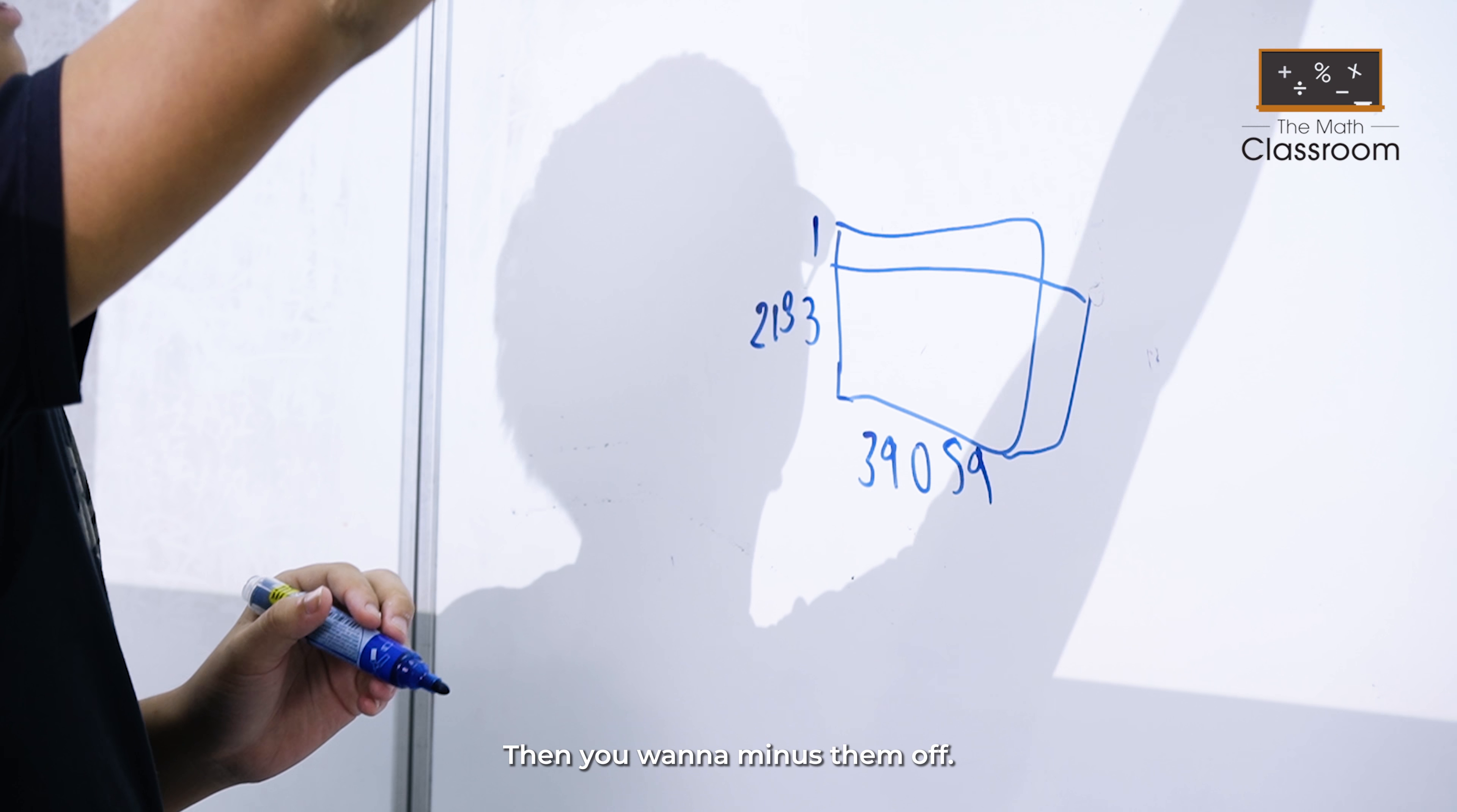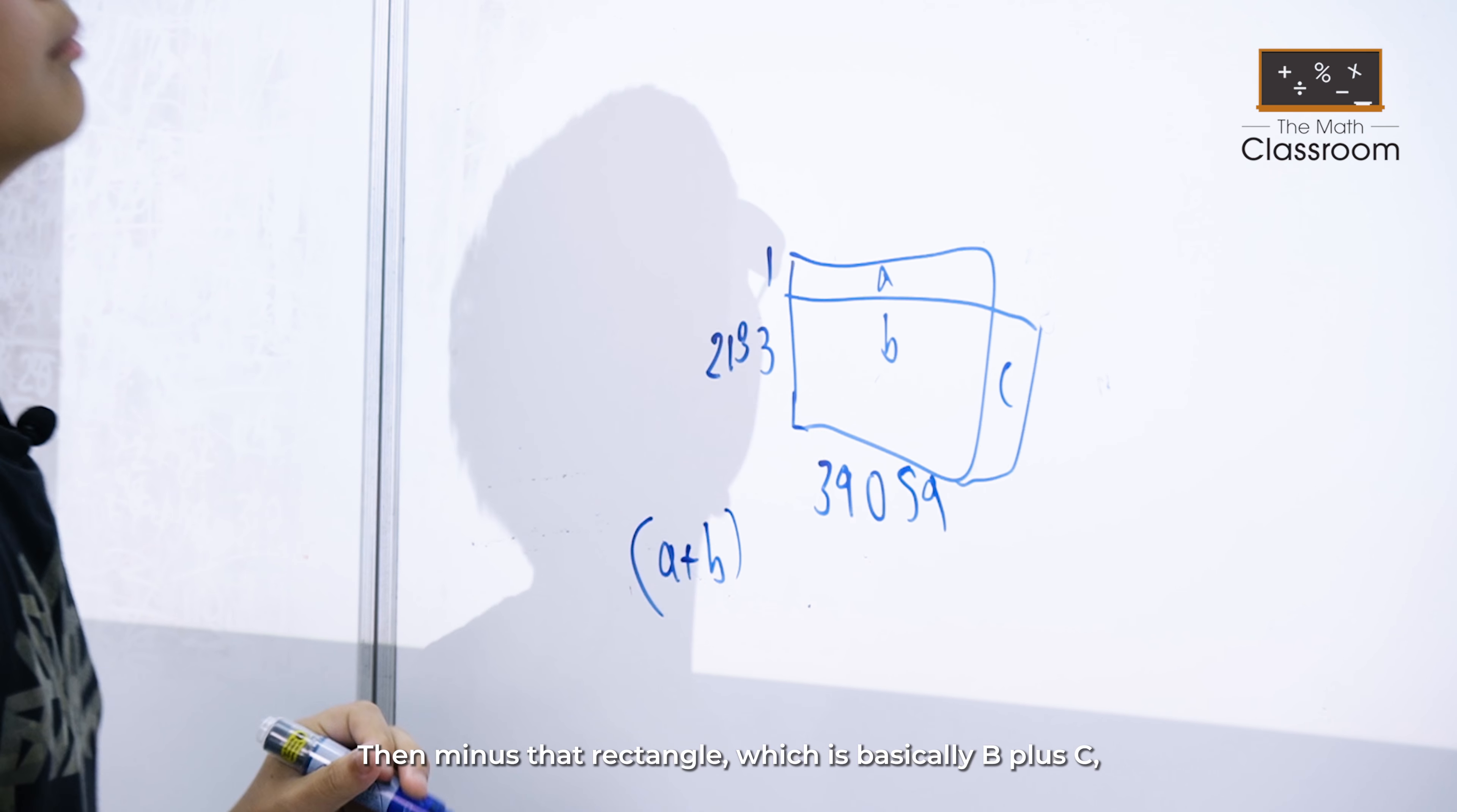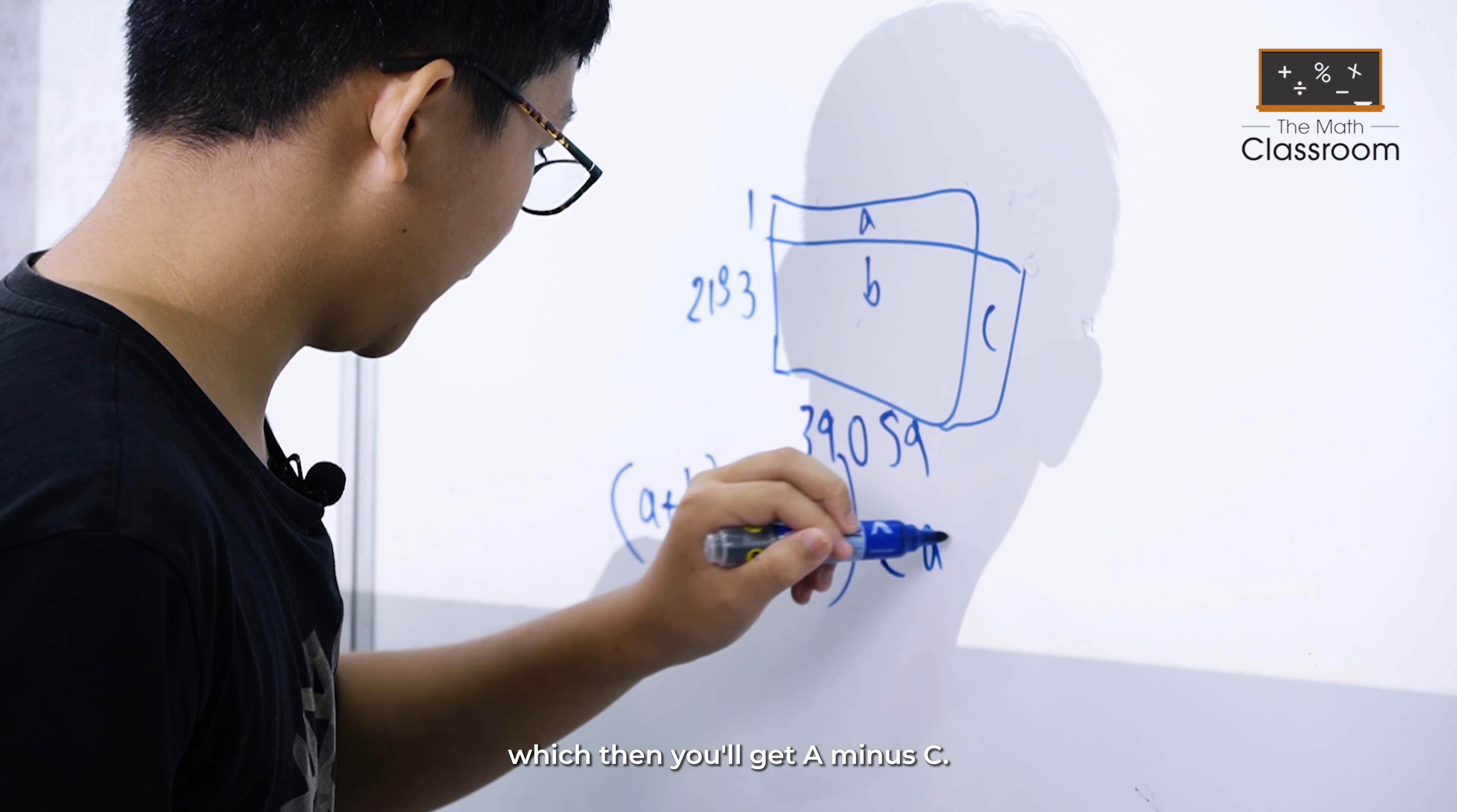Then you want to minus them. So let this be A, B, and C. The first rectangle is basically A plus B. Then minus that rectangle, which is basically B plus C, which then you get A minus C.